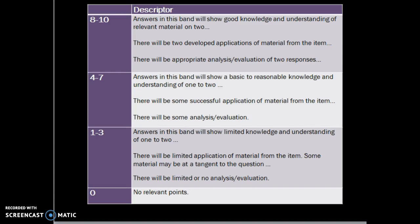As you can see, in the top band it requires really good knowledge and understanding of two things. In this case it is going to be the functions of the family according to Marxists. There will be two developed applications from the item — those are the item hooks — where you select info from the item, apply your knowledge, and link it back to the question. There will also be analysis or evaluation; you can offer analysis to still get those top marks. We are looking for two equal paragraphs following those skills, with no introduction or conclusion required.